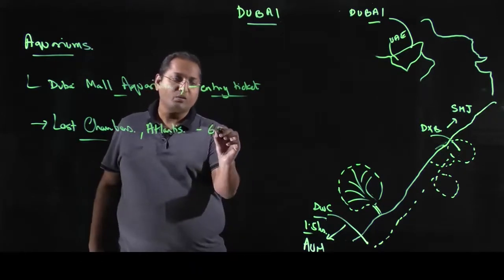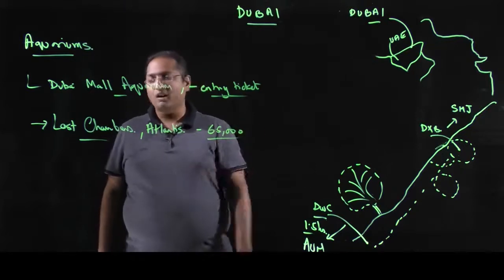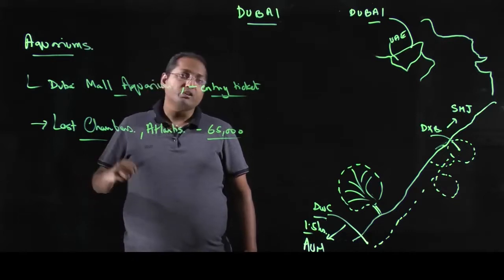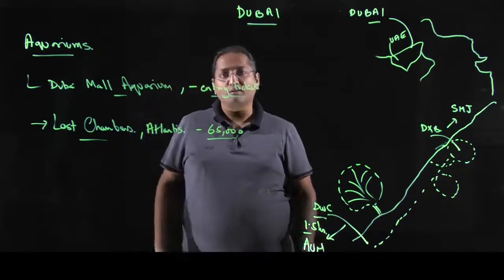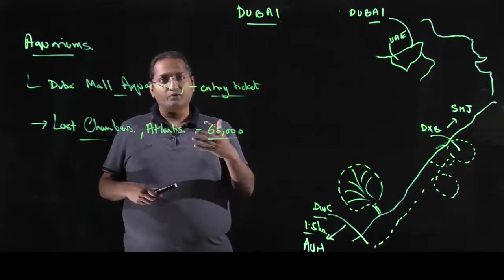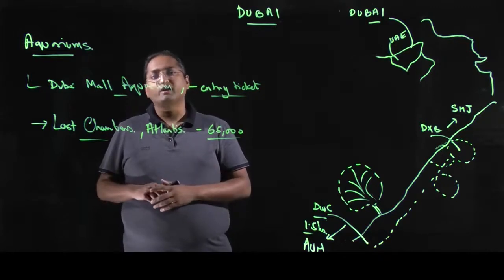Lost Chambers has approximately 65,000 species or animals inside it, and the best option is that in case you're taking a day trip you can combine Lost Chambers with AquaVenture. It helps to save on cost as well as you can spend a complete day at the Atlantis.